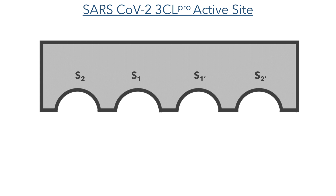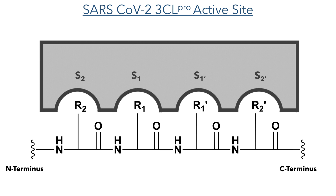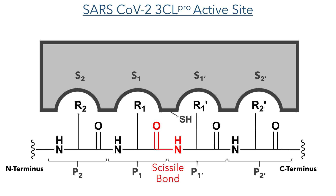In the active site of the enzyme there are subsites which bind to the side chains of the replicase polypeptide and hold it in place. This orientates the peptide bond which will be broken, known as the scissyl bond, in the active site where it can react with the thiol group of a cysteine residue, which catalyses the hydrolysis reaction involved in cleaving the protein. The subsites on the enzyme and the peptides on the chain are numbered in relation to this scissyl bond.